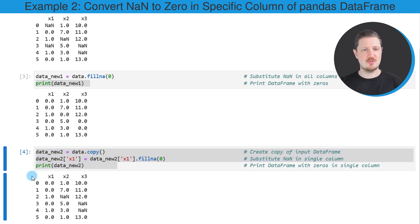After running these lines of code, you can see that we have created another data frame, which contains NAN values in the columns x2 and x3. However, in the first column, the NAN values have been replaced by the value 0.